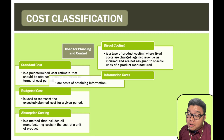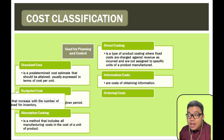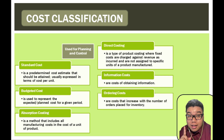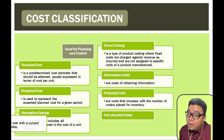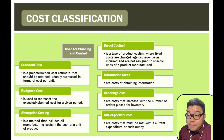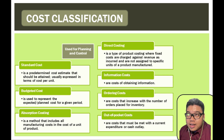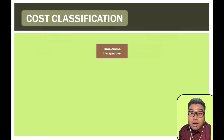Information cost is the cost of obtaining information. Ordering cost is the cost to place a single order, regardless of the number of inventory items. Out-of-pocket costs are costs that must be expensed outright or require a cash outlay.